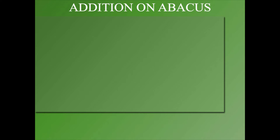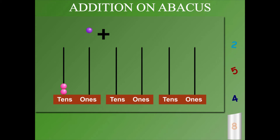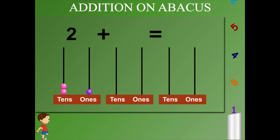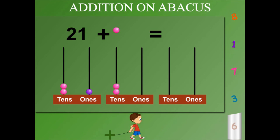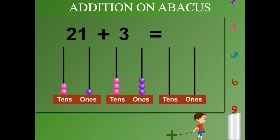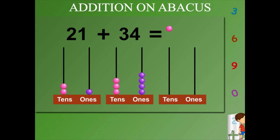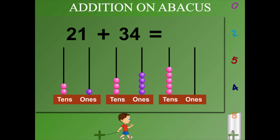Addition on abacus. Here is an abacus. Let's put two balls in the tens and one ball in the ones — this makes 21. Now three tens and four ones, this makes 34. Add the two: one, two, three, four, five tens.